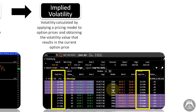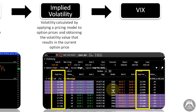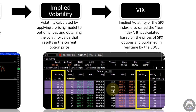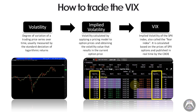Now that we know what implied volatility is, what is the VIX? The VIX is the implied volatility of the SPX index. It's also called the Fear Index. It is calculated based on the prices of SPX options and is published in real time by the CBOE — the Chicago Board Options Exchange. So VIX is the implied volatility of SPX, based on the prices of SPX options.